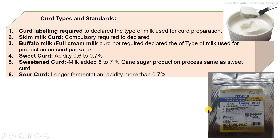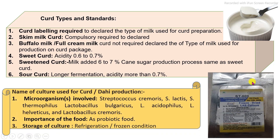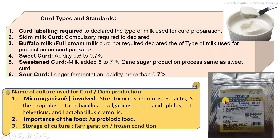The specific culture used for curd production is very important. The standard laboratory culture is prepared under controlled conditions and then freeze-dried. This freeze-dried culture is required to be stored properly under refrigeration or frozen conditions. It is added at a ratio of 0.5 to maximum 2%, depending on the specific incubation temperature and timing combination. The main microbial cultures used are mixed cultures, specifically Lactobacillus species and Streptococcus species.